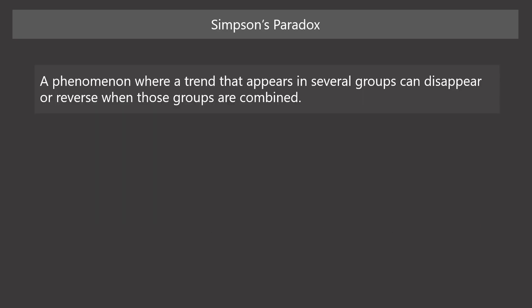The phenomenon UC Berkeley's admission data tells us is called Simpson's Paradox, described by a British statistician Edward Simpson in 1951. Simpson's Paradox is a phenomenon where a trend that appears in several groups can disappear or reverse when those groups are combined.